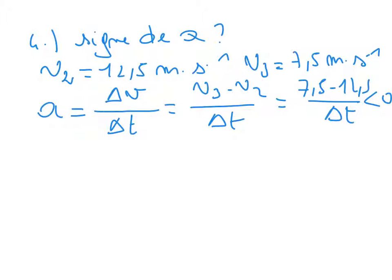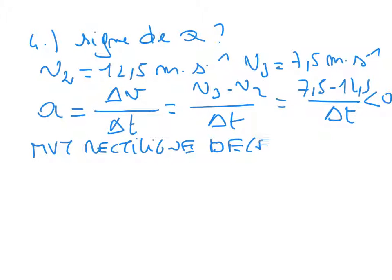En conséquence, on a donc un mouvement rectiligne décéléré. Du fait du signe négatif, la vitesse ne cesse de diminuer au cours du mouvement. Donc on retrouve bien la première constatation qu'on avait faite dans la question 2.